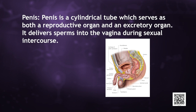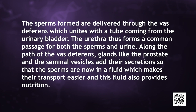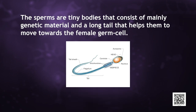The penis is a cylindrical organ which serves as both a reproductive organ and an excretory organ. It delivers sperm into the vagina during sexual intercourse. The sperms formed are delivered through the vas deferens, which unites with the tube coming from the urinary bladder — the urethra — forming a common passage for both sperms and urine. Along the path of the vas deferens, glands like the prostate and seminal vesicles add their secretions, so that the sperms are in a fluid which makes their transport easier and also provides nutrition. The sperms are tiny bodies that consist mainly of genetic material and a long tail that helps them move toward the female germ cells.